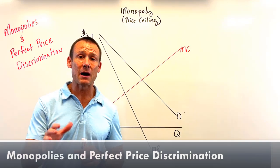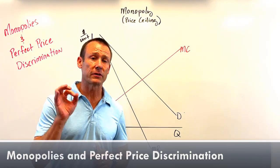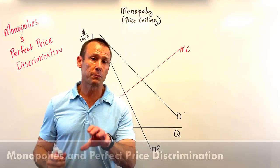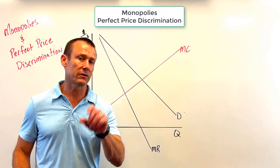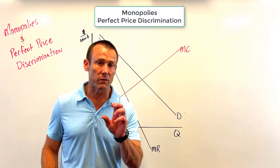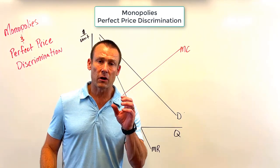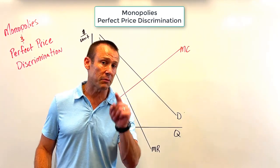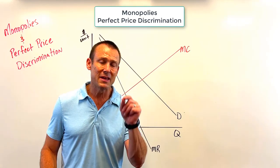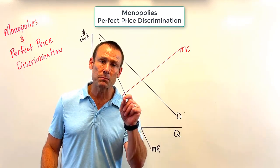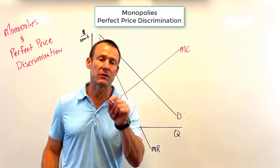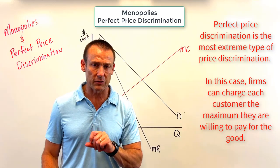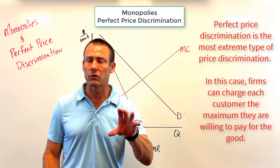In this video we're talking about monopolies and perfect price discrimination. Perfect price discrimination is a situation where firms charge every single individual a different price, and the price they charge is the maximum price each individual is willing to pay.